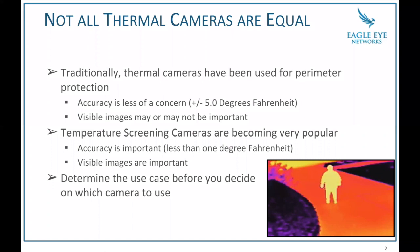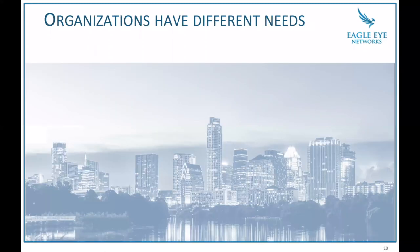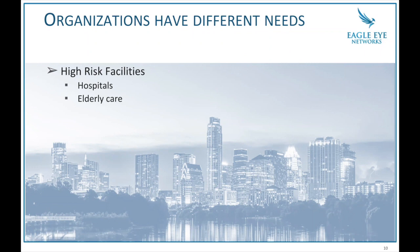Just like there are different cameras, there are different types of organizations with different needs — and this especially applies to thermal camera screening. High-risk facilities like hospitals, nursing homes, and elderly care facilities have high-risk occupants — patients, tenants — where letting somebody through who shouldn't be is much more consequential. The needs are very different for different organizations.